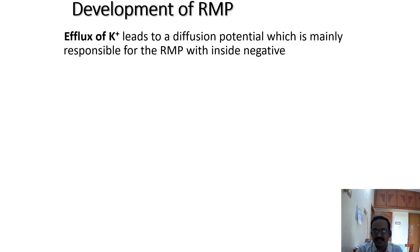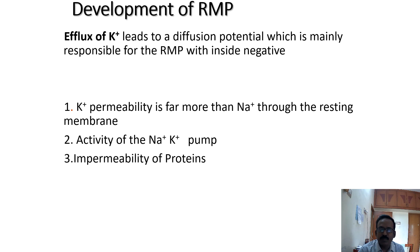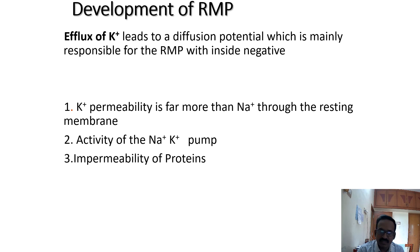Development of resting membrane potential. Potassium efflux — the leaving of potassium from inside the cell to outside plays an important role in generating the resting membrane potential. Potassium permeability is more than sodium through the resting membrane. The activity of the sodium-potassium pump also plays an important role. The impermeability of proteins, which are present more inside the cell, also creates the negative resting membrane potential.